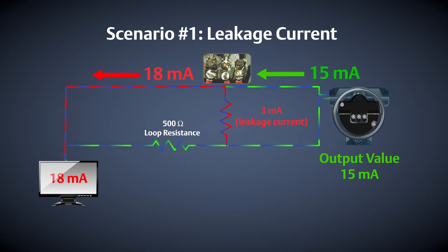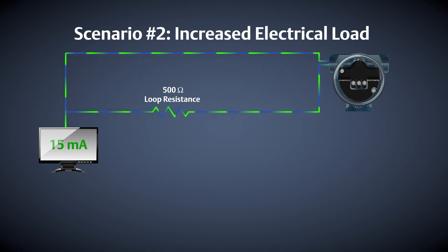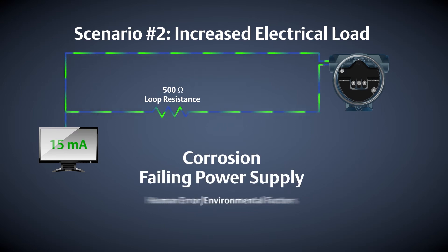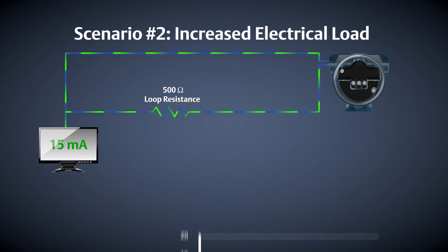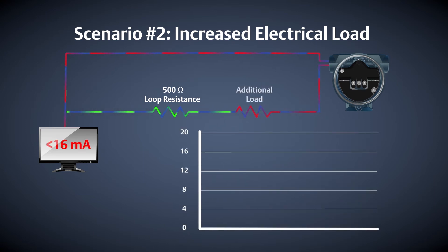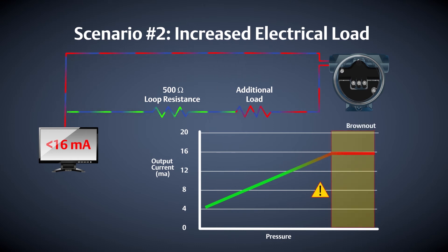The second scenario is an increase in the electrical load of the wiring loop. This can be caused by corrosion, a failing power supply, human error, or other environmental factors. In this scenario, the electrical loop was designed to have 500 ohms of resistance. When additional resistance is inadvertently added to the control loop, the reliability of the control loop is compromised. With an increased wiring loop resistance, there may not be enough voltage for the transmitter to drive the loop to the proper milliamp value or even to an alarm state.